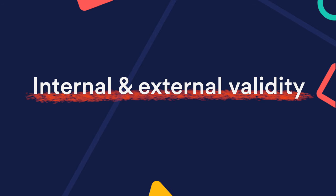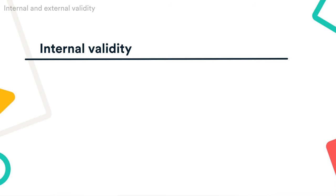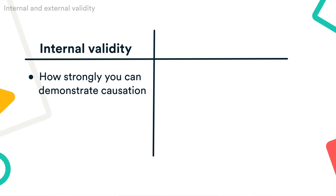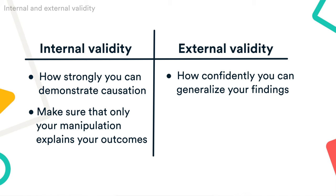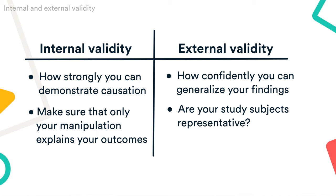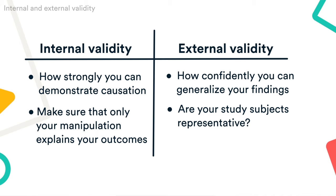As you design your experiment, you'll need to strike a balance between internal and external validity. Internal validity is about how strongly you can demonstrate causation — you'll need to make sure that nothing other than your manipulation can explain your outcomes. External validity is about how confidently you can generalize your findings to broader populations or real-life settings. Are your study subjects representative of the population you're interested in? Is your study environment similar to the context you apply your findings to?